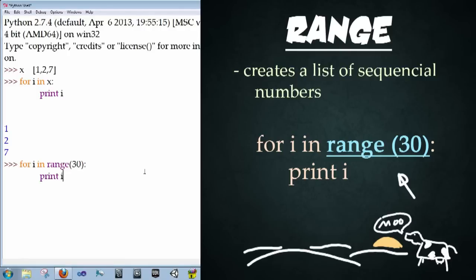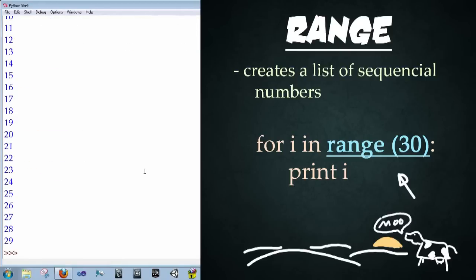colon, enter, print i, enter, enter. And now look what happened. We've got a full list of numbers printed out from zero all the way up to 29. So again, it prints up to, but not including the last number in the range.